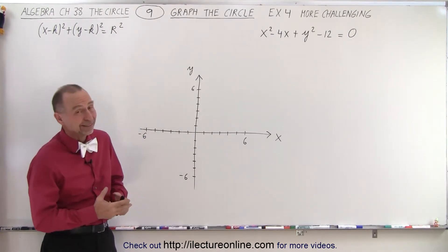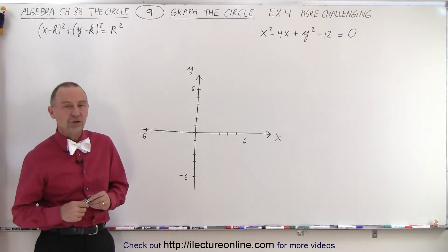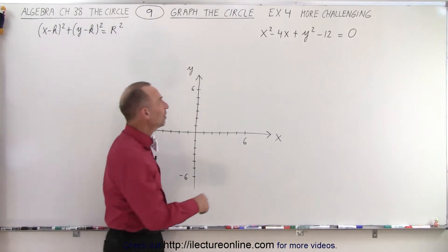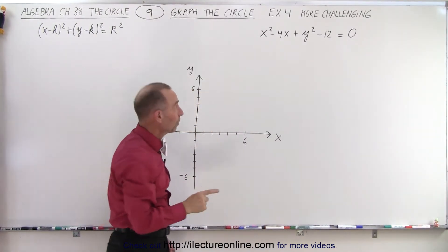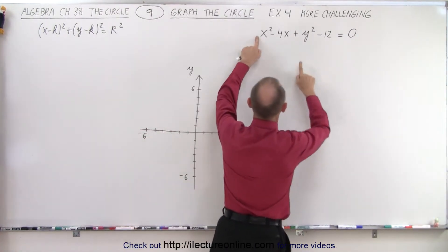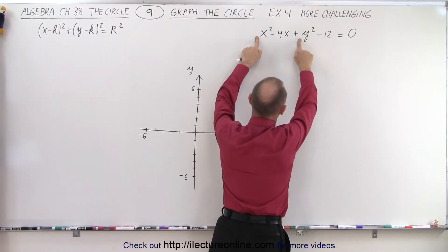At first, you may look at that and realize I'm not so sure this is an equation of a circle. But if you do see an x-square and a y-square in there, it may be a circle, especially since both the coefficients in front of the x-square and the y-square term are the same.